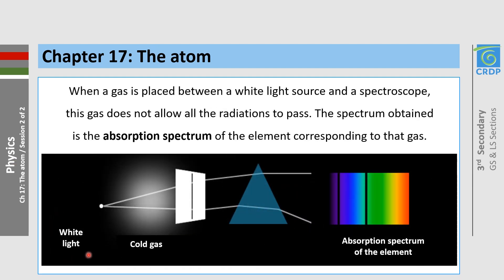If we use a white light source, and between the source and the spectroscope we place a cold gas, we will then obtain a line absorption spectrum of the element corresponding to that gas.